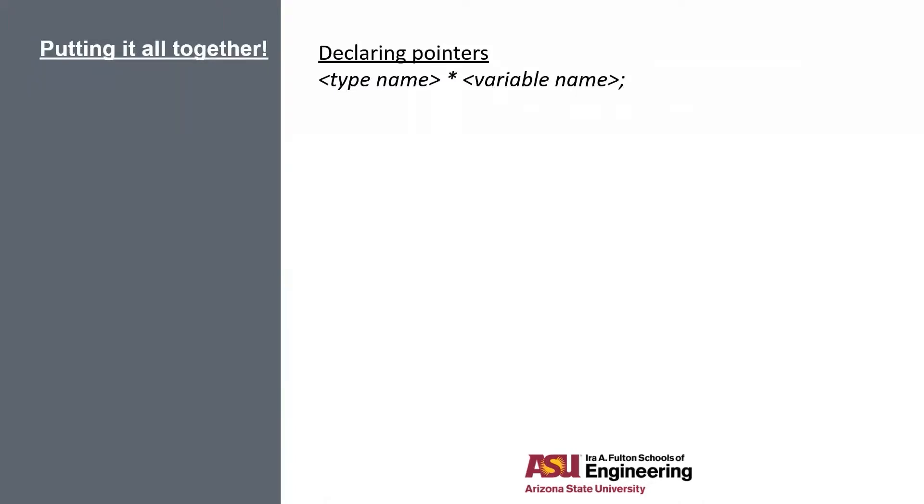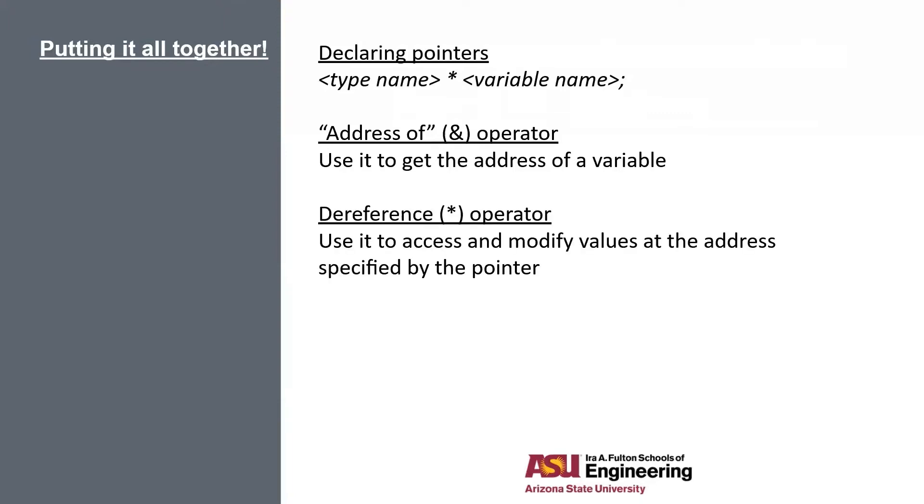Let's just review everything we just went over. Declaring pointers, the syntax is just type name, then star, then variable name. The address of operator, which is the ampersand, we use it to get the address of a variable. And the dereference operator, which is star, does the opposite. We take the address and it returns the value.